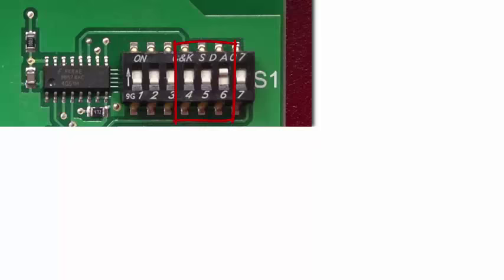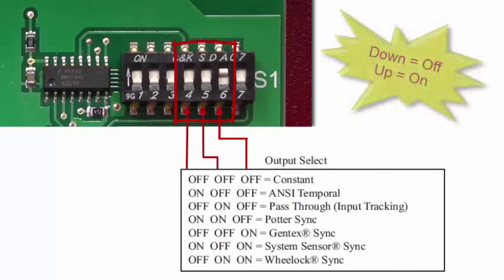The next 3 switches designate the output pattern for the notification circuit. Your option for each notification circuit is constant ON, ANSI temporal output, pass-through, POTR or AMSECO sync, Gentex sync, system sensor sync, and Wheelock sync.